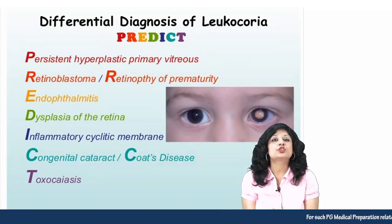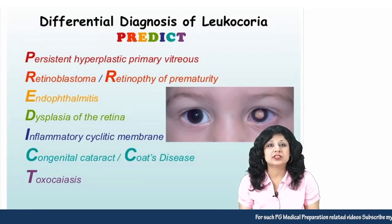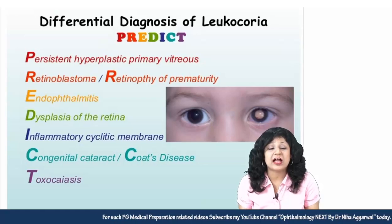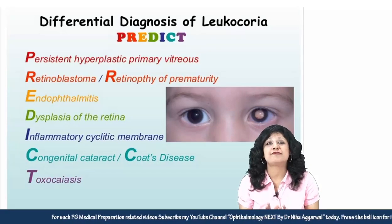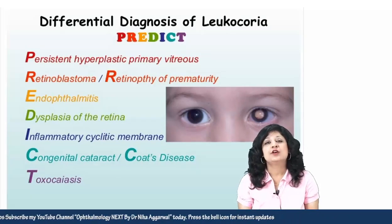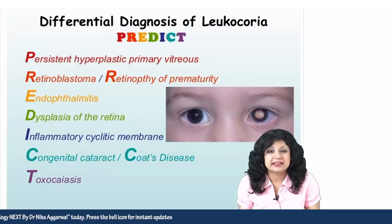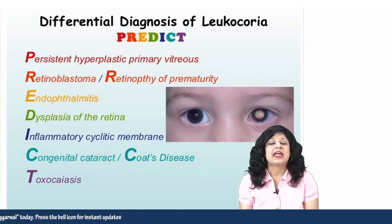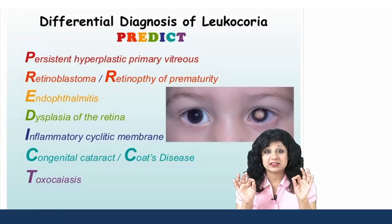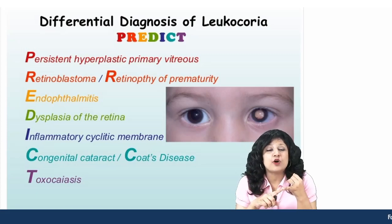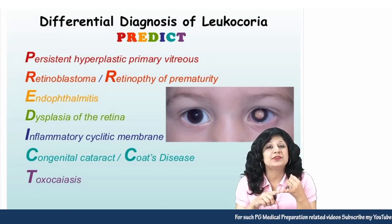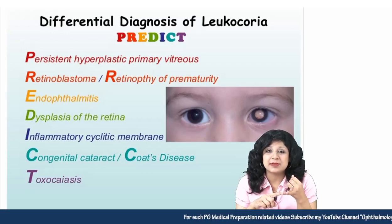In this video we will be talking about the differential diagnosis of leukocoria — a very important topic for solving clinical scenarios. The key mnemonic is PREDICT. P stands for Persistent Hyperplastic Primary Vitreous, that is PHPV.